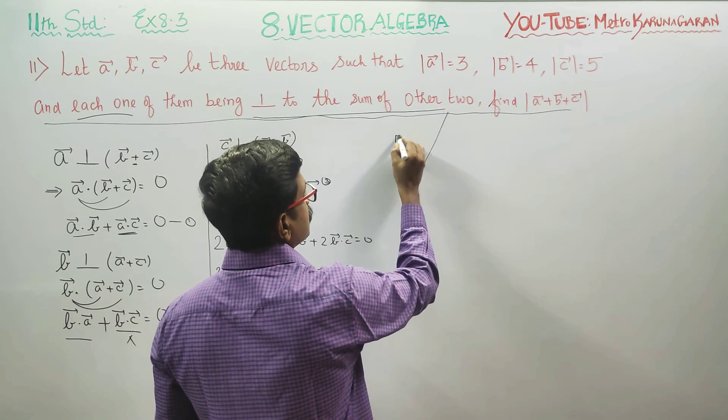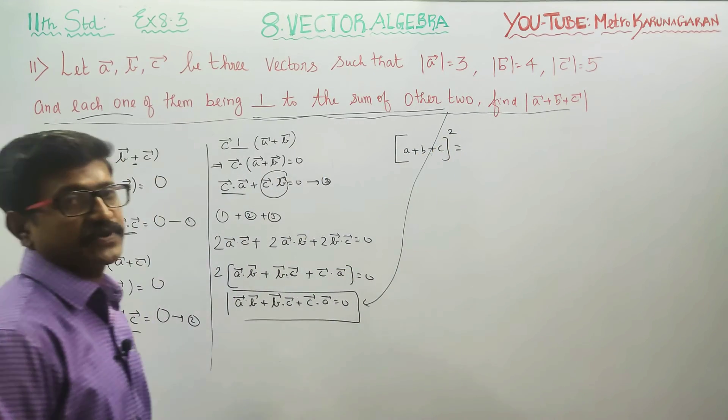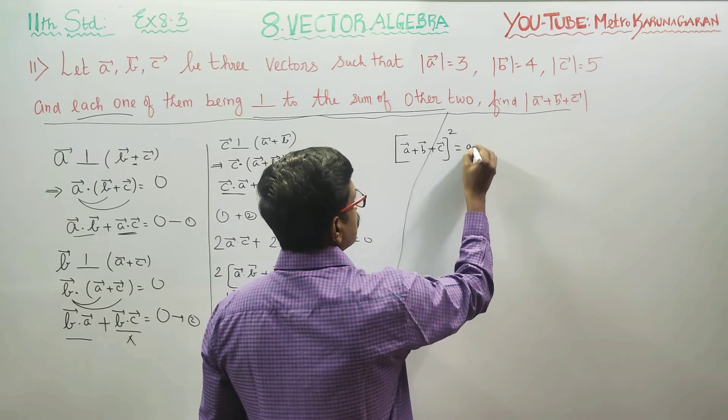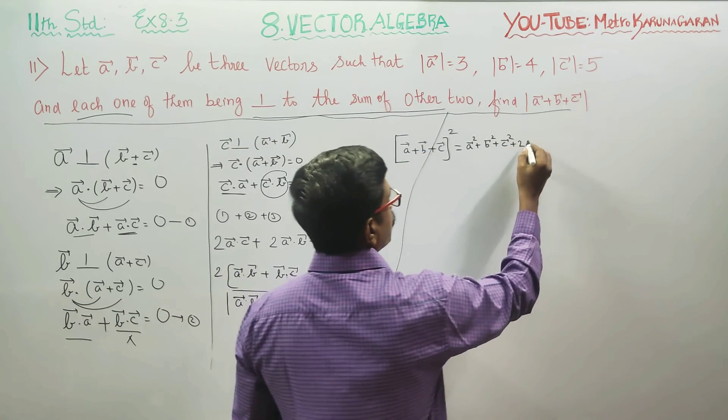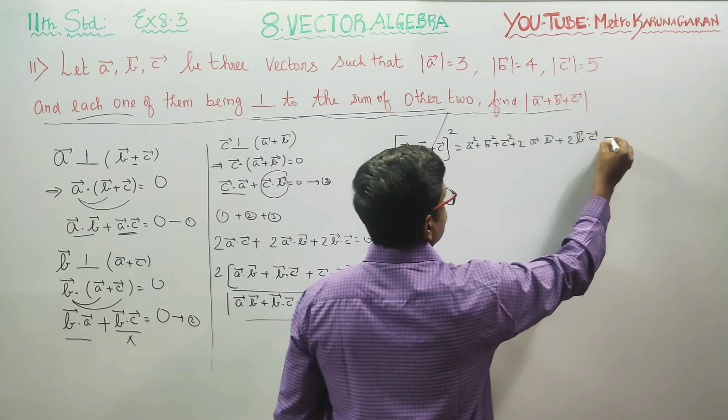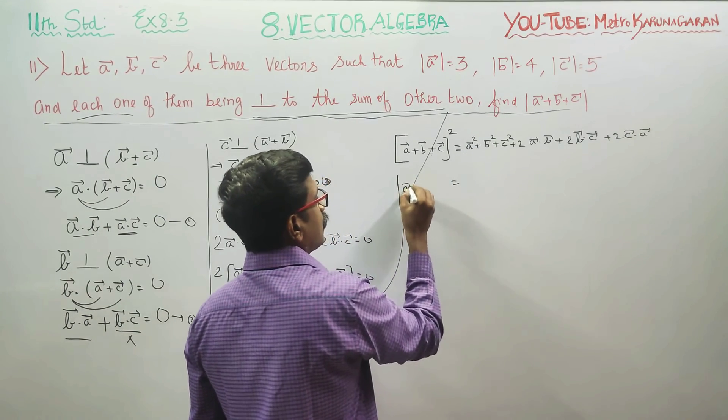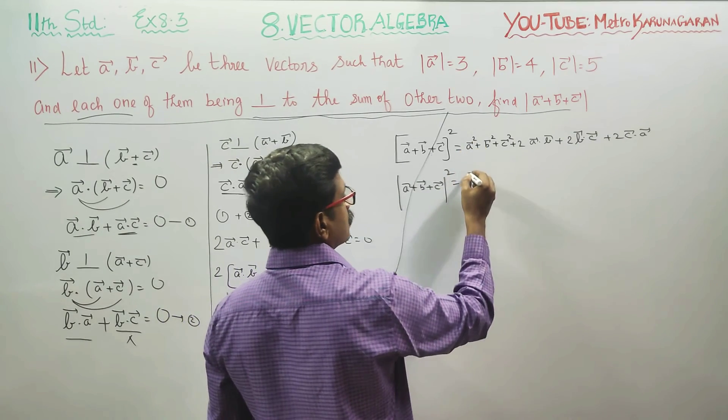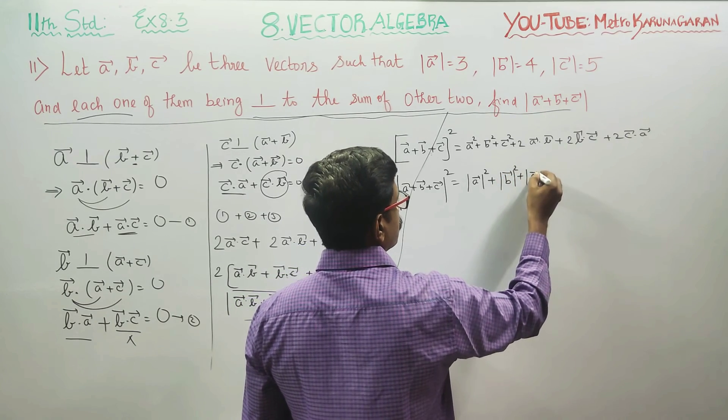I am going to start with A plus B plus C whole square. What is A plus B plus C whole square? The magnitude whole square is A vector square plus B vector square plus C vector square plus 2 times A dot B plus 2 times B vector dot C vector plus 2 times C vector dot A vector. This can also be written as magnitude whole square.